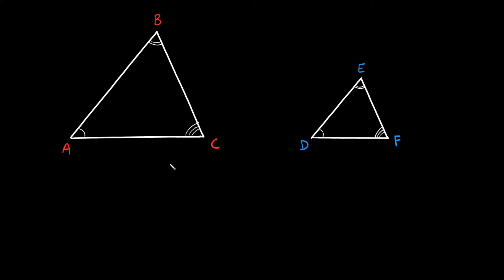The way that you know these two triangles are the exact same shape is that they have to have the exact same angles. So angle A matches or corresponds to angle D, angle B corresponds to angle E, and angle C corresponds to angle F. Since they have the exact same angles, they are the exact same shape. When two angles are the exact same size, we call them congruent — it's just a fancy way of saying the same exact angle.